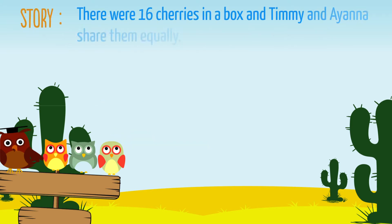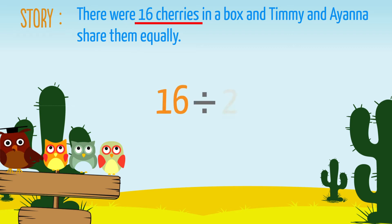There were 16 cherries in a box and Timmy and Ayanna share them equally. We can write a calculation to explain how many cherries each person gets. In the story, there are 16 cherries and they are shared equally between two people.